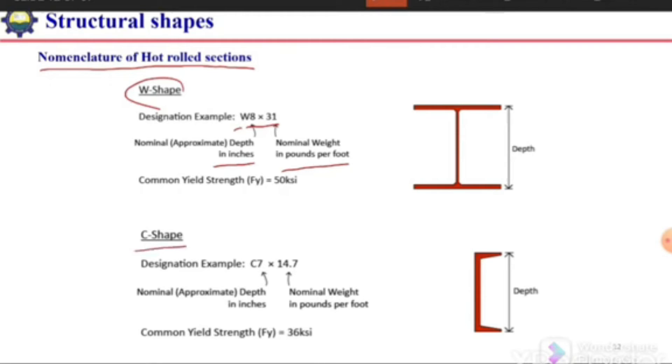For the C section, we use the letter C followed by two numbers. The first number indicates the depth of the section and the second number indicates the nominal weight per unit length.